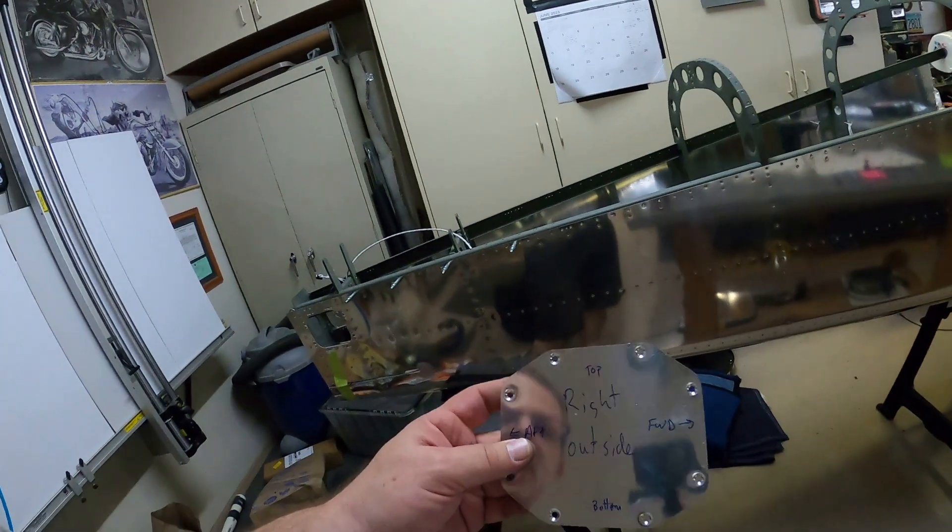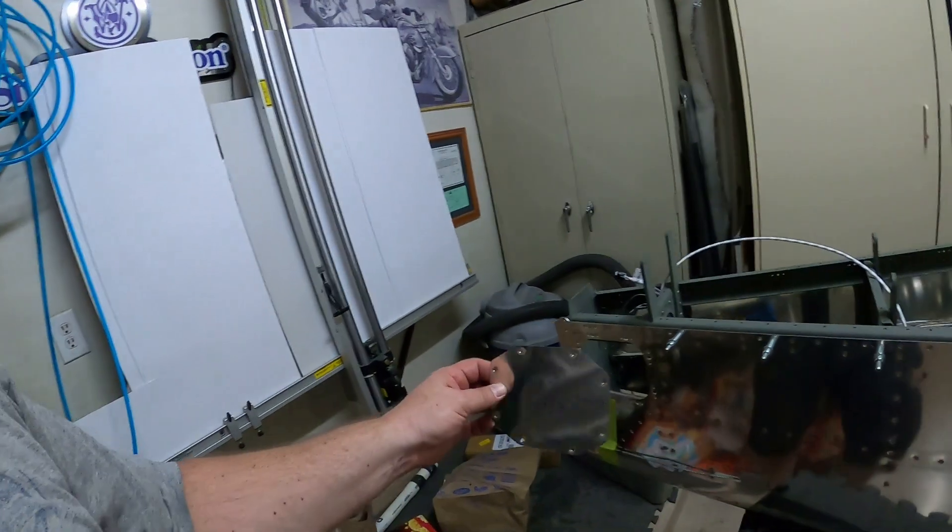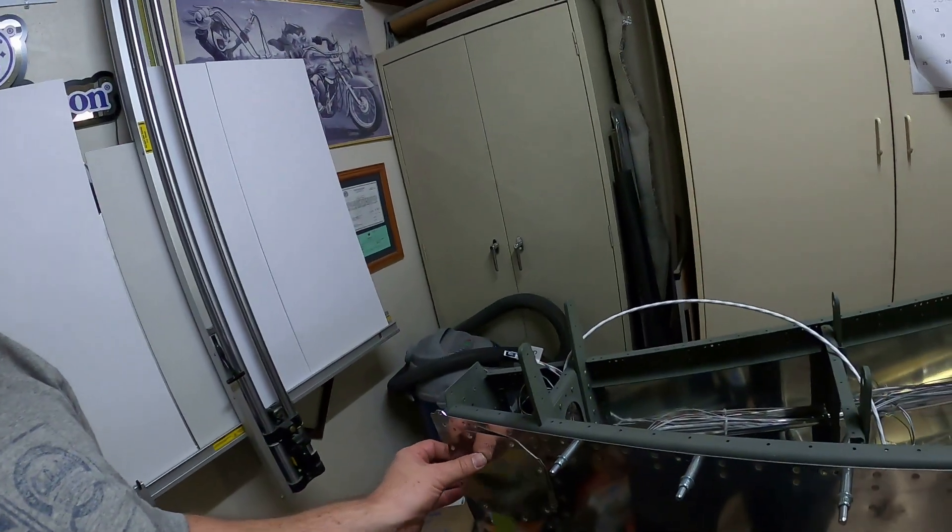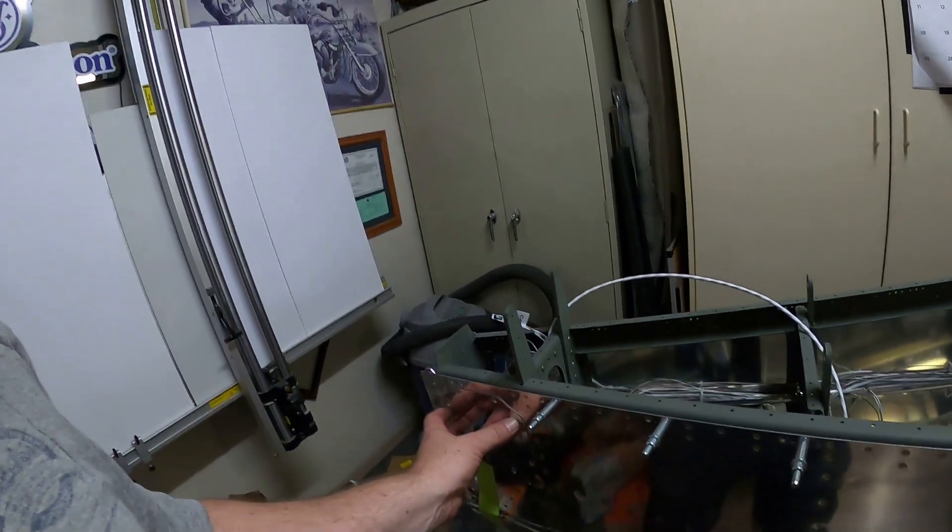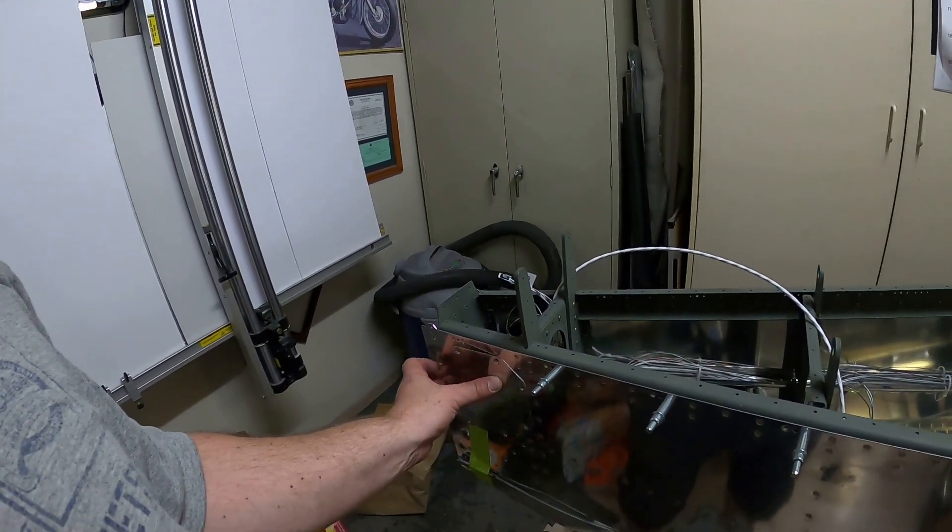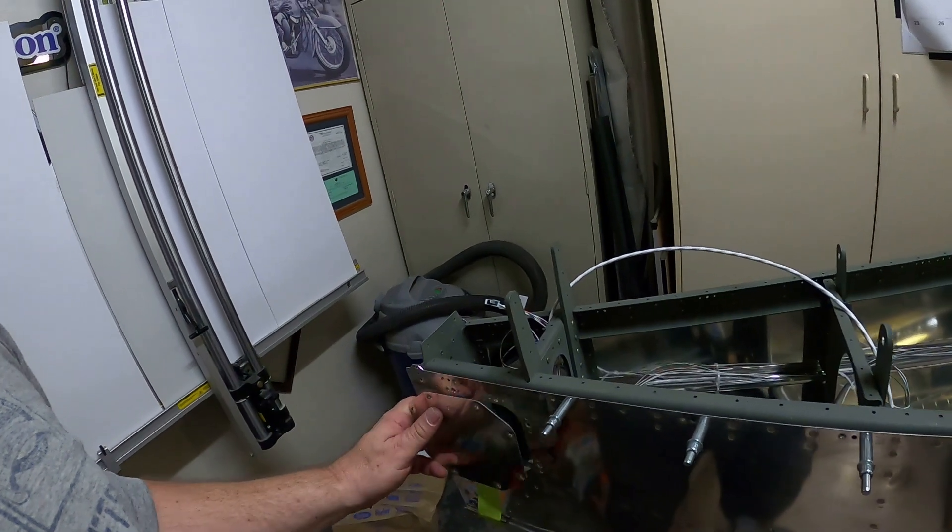So I decided to do the optional access panel dimpling. The side panel here that goes in the back, the optional one has you flush mount that guy instead of doing screws that stand out. Honestly, I don't know if I would recommend it. And there you have it. Feel free to subscribe and like this video, and we'll talk to you later. See ya.